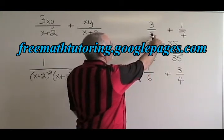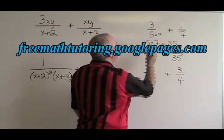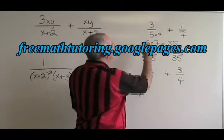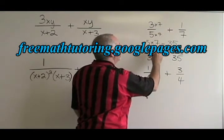How do we turn 5 into 35? We multiply it by 7. If we're multiplying 5 by 7, we have to multiply 3 by 7, and we end up with 21 over 35.